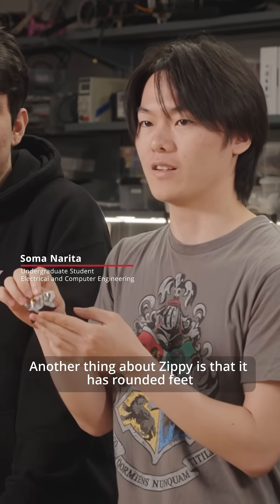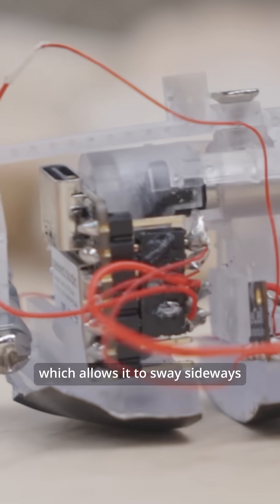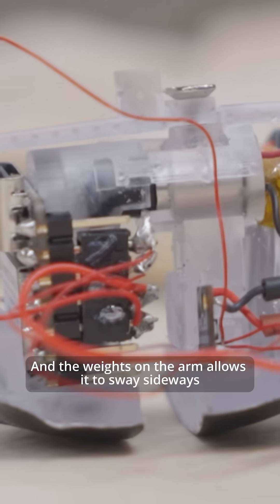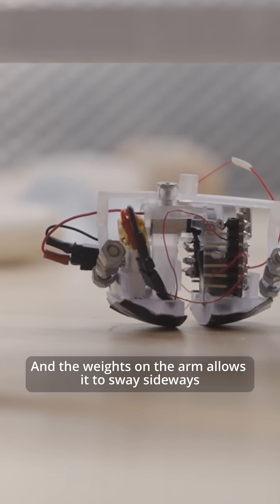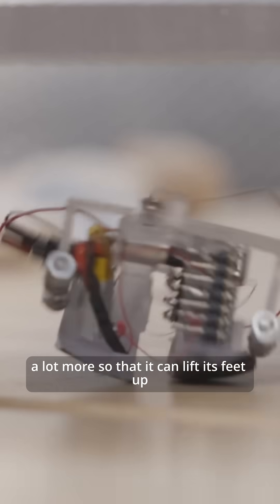The other thing about Zippy is that it has rounded feet, which allows it to sway sideways and walk back and forth. And the weights on the arm allows it to sway sideways a lot more so that it can lift its feet up to swing back and forth.